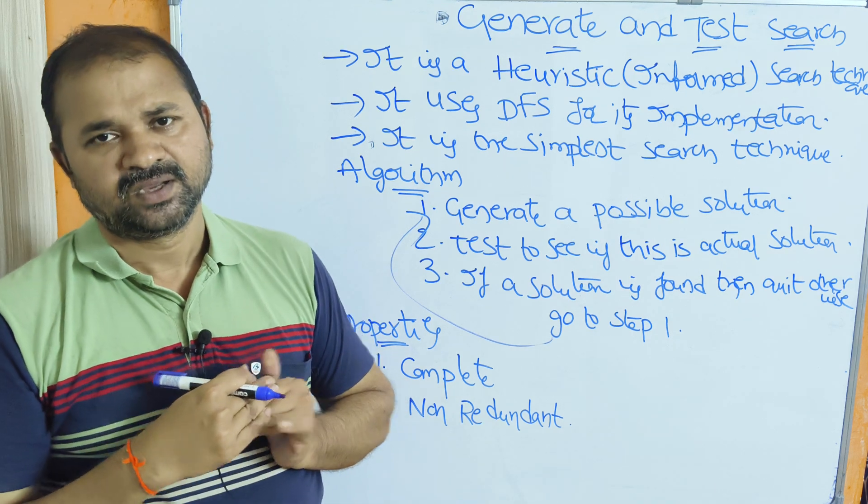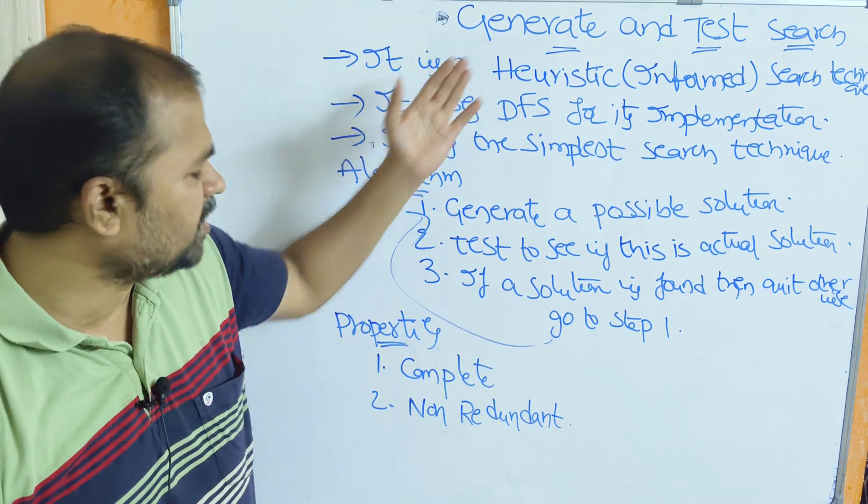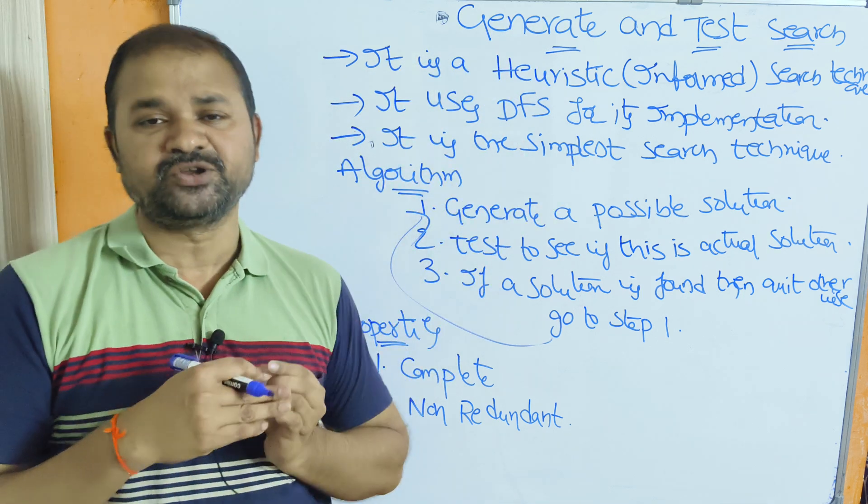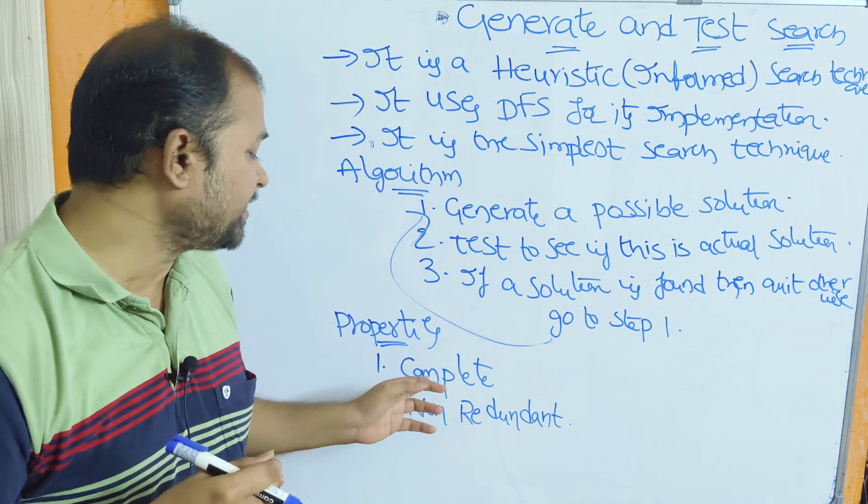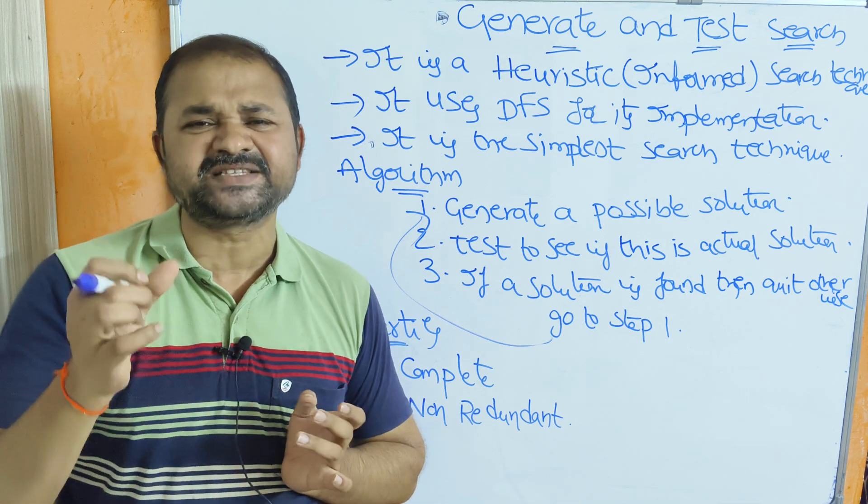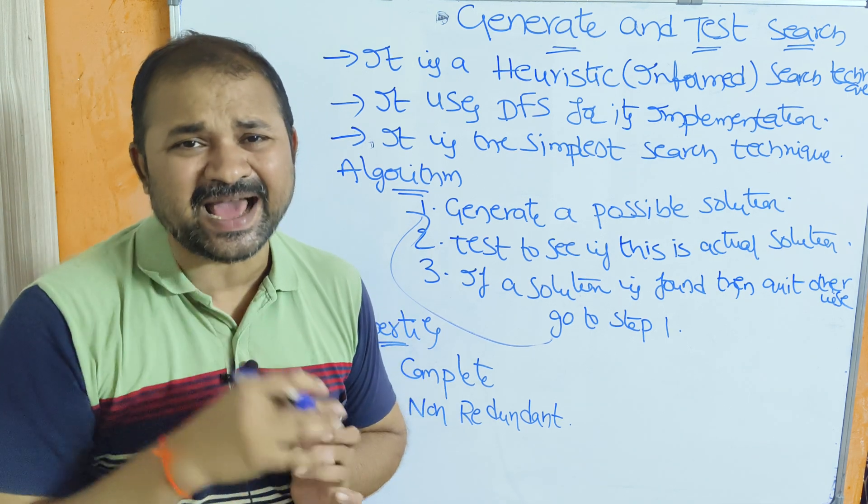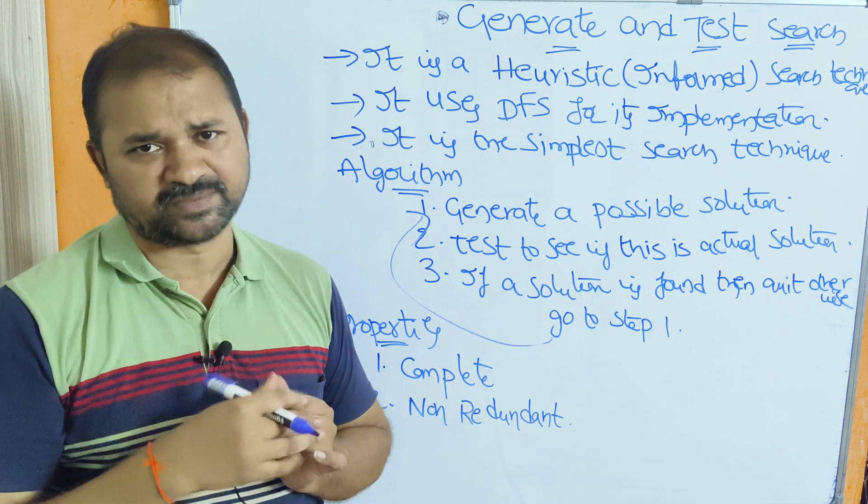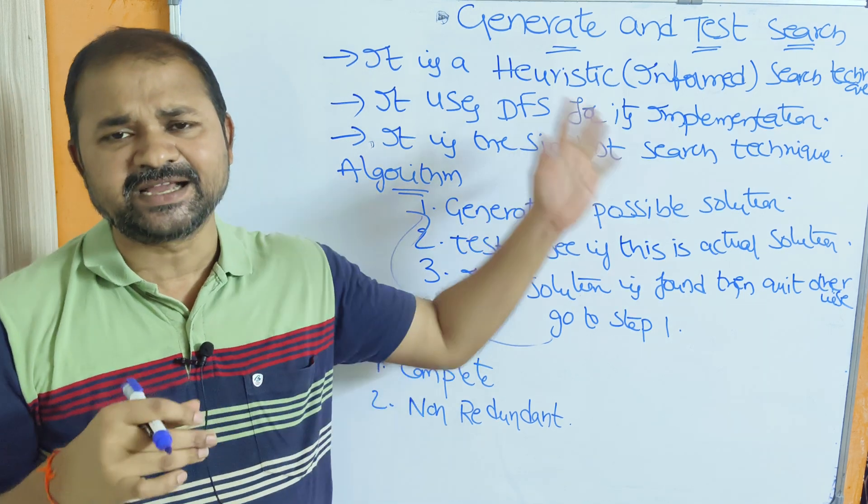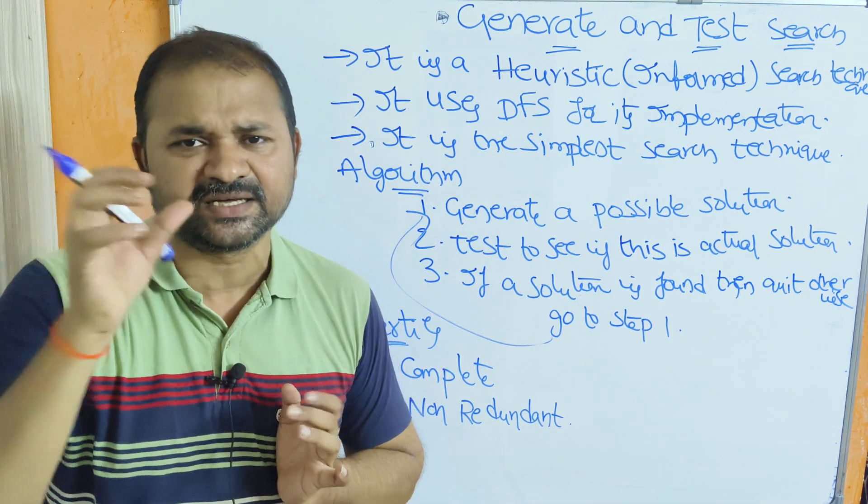Now let us see some properties of the generate and test search algorithm or generator module. First property, it is complete. Complete means it always gives 100% guarantee about the solution. So if the problem has the solution, then this algorithm always produces the solution.